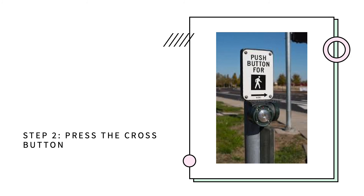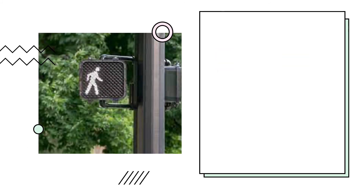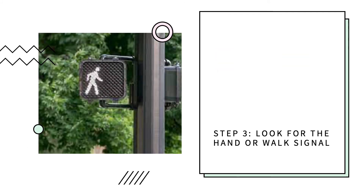After completing step one, step two is to press the cross button and wait. The third step is to wait and look for the walk sign to appear. Once the sign appears, you can proceed with the next step.